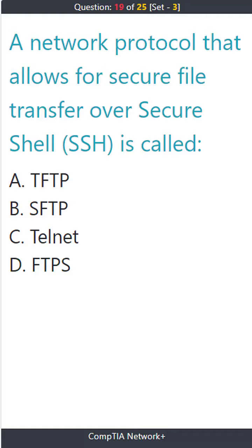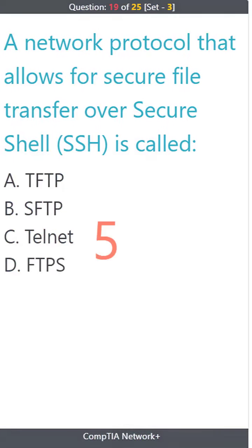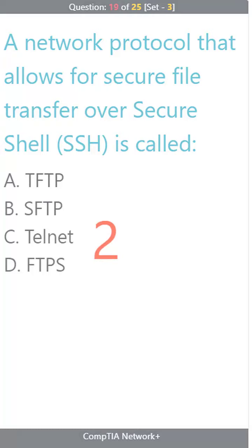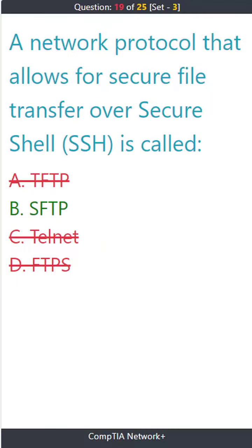Question 19. A network protocol that allows for secure file transfer over Secure Shell (SSH) is called: A. TFTP. B. SFTP. C. Telnet. D. FTP. The correct answer is B. SFTP.